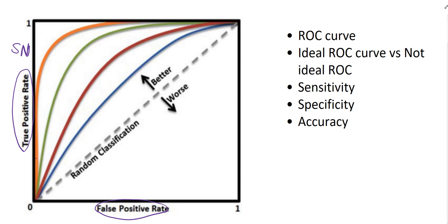False positive means you thought it was a true positive, but it's not. An important equation you may be tested on: false positive rate equals 1 minus specificity. The x-axis of the ROC curve represents the false positive rate, which equals 1 minus specificity.